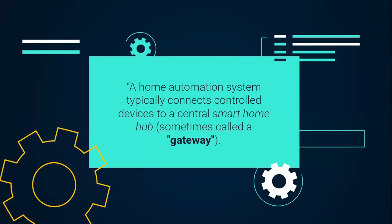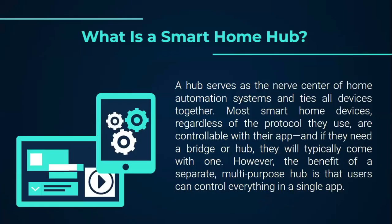A home automation system typically connects control devices to something called a central home hub, often known as a gateway. A hub serves as the nerve center of home automation systems and ties all devices together. Most smart home devices and services, regardless of the protocol they use to operate, are controllable with their own application. And if they need a bridge or hub, they will typically come with one. However, the benefit of a separate or multi-purpose hub is that users can control everything in a single application.